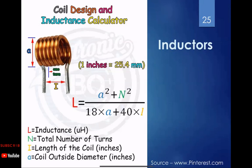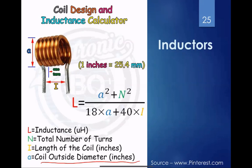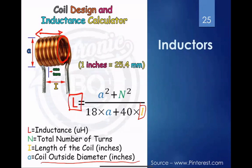Inductors are made by winding copper wire into coils, which creates a magnetic field when current flows through them. Inductance is calculated using the coil's outer diameter, length, and number of turns. One full loop counts as one turn. These values are usually provided in the component's datasheet, and you plug the numbers into the inductance formula.